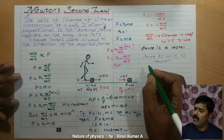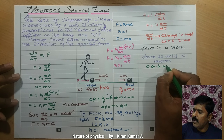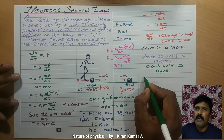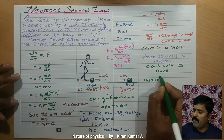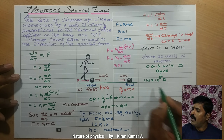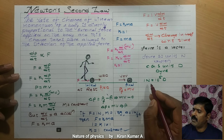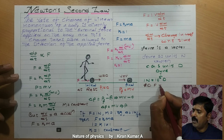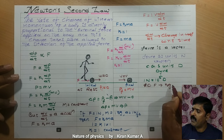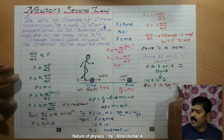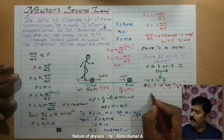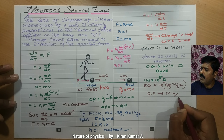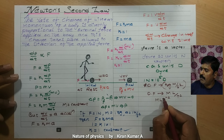The CGS unit of force is dyne, represented by D. 1 Newton is equal to 10 to the power of 5 dyne. Using the basic formula F = ma, the dimensional formula of force is: mass is kg, acceleration is meter per second squared, so the dimensional formula is MLT to the power of minus 2.